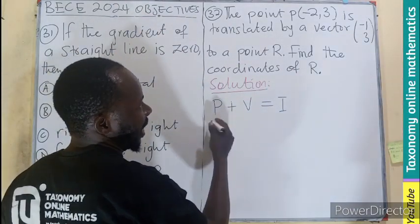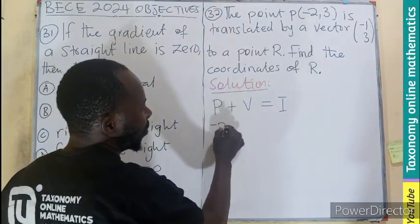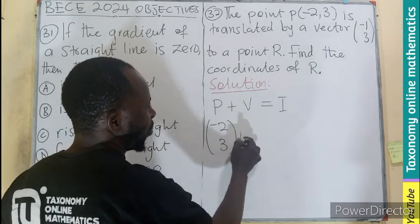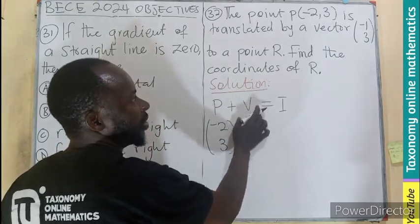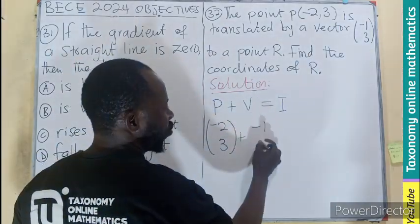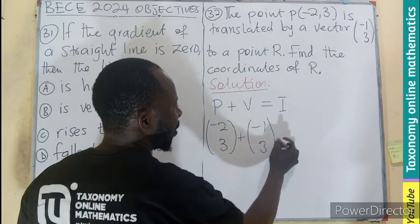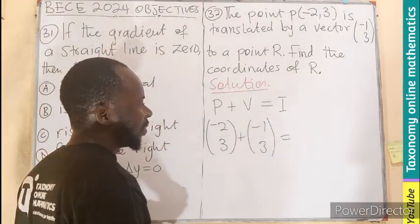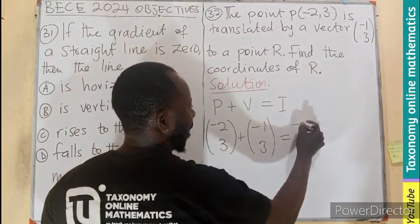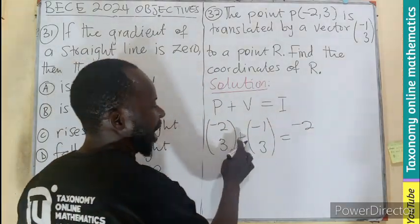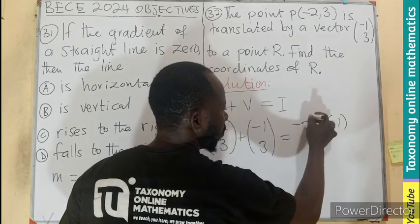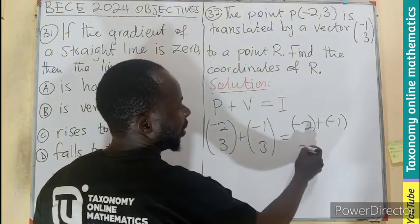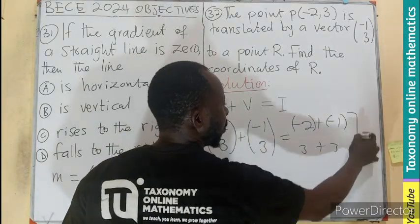So I'll be having the point in the vector column form (-2, 3) plus the translation vector, which is (-1, 3). That will be giving us the value for R, which in this case, we are going to have -2 plus -1, then 3 plus what? Three.